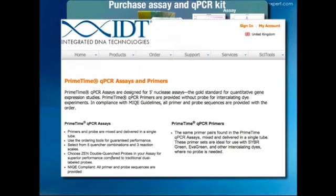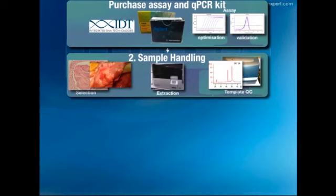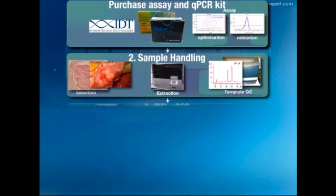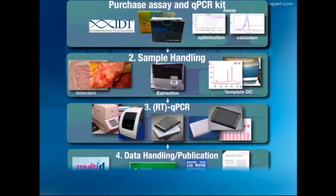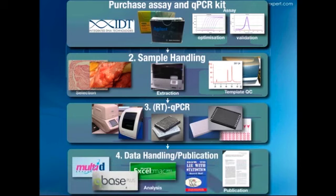Sample handling is very important, and many people focus on optimal extraction and quality control for template but forget that how you select your sample in the first place will determine the quality of your assay—this is where laser capture microdissection and choosing the right biopsy come in. The easiest step these days is actually carrying out the experiment itself in the PCR instrument. The important point is having appropriate controls in your plates. How you handle your data—from a simple Excel spreadsheet to sophisticated software such as Multi-D and qBase Plus—plus a statistical component, all lead to publication.